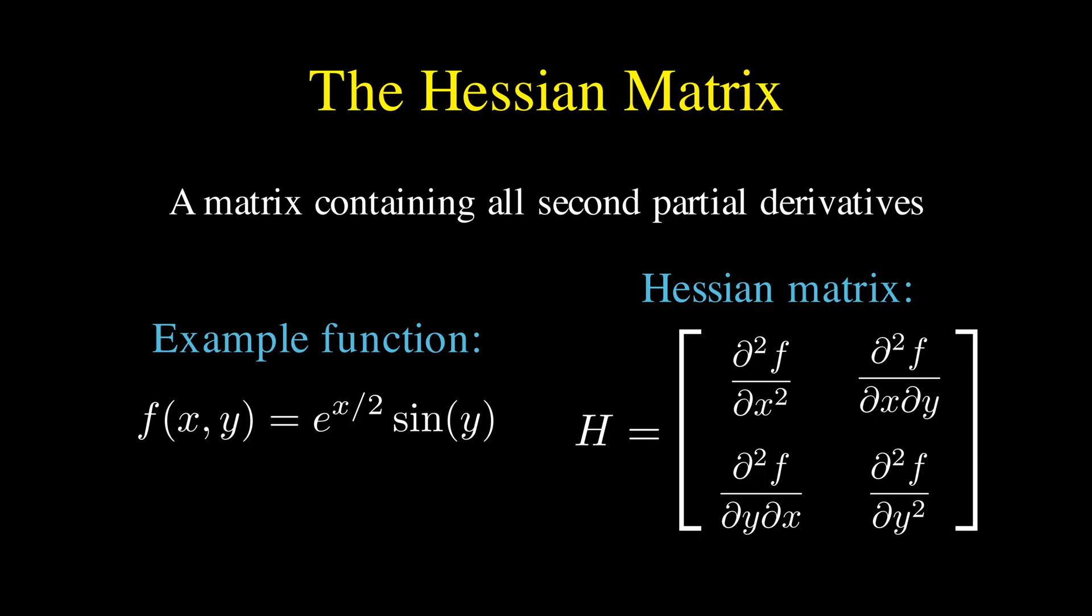The way this works is that each entry in the matrix represents a different second partial derivative, where the first component in the upper left is the partial derivative of f with respect to x taken twice. The upper right is where we differentiate first with respect to x and then with respect to y. The lower left is where we differentiate first with respect to y and then with respect to x. And the bottom right is where we differentiate with respect to y both times.